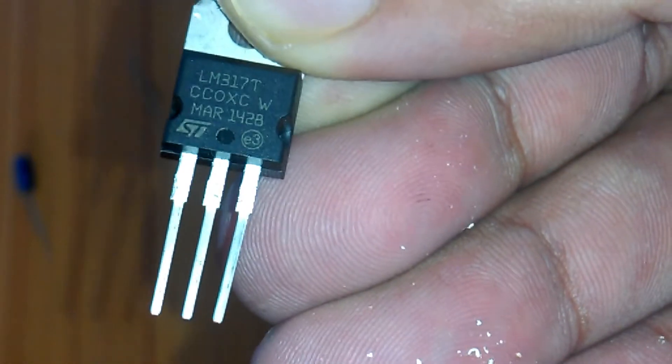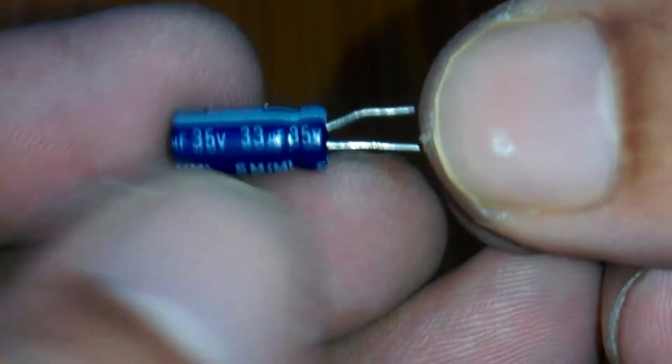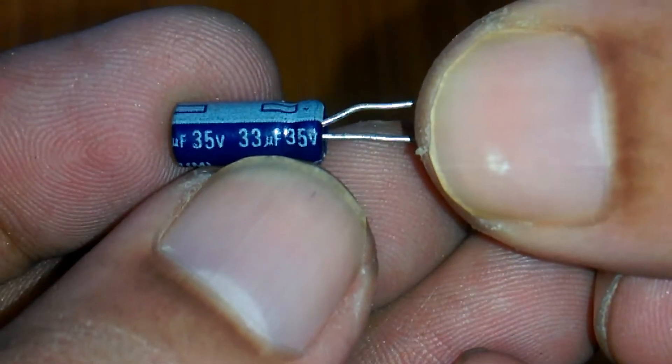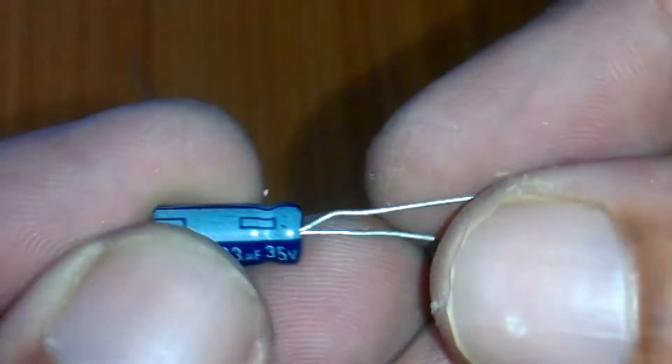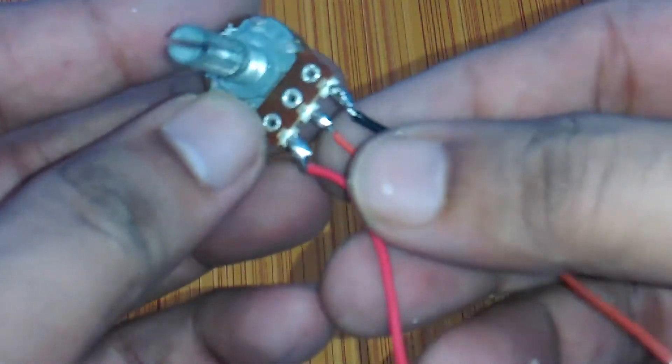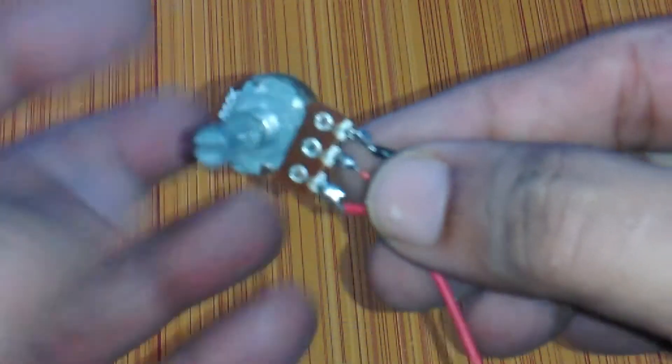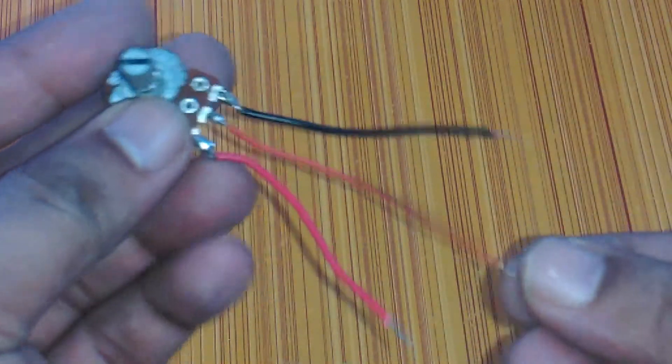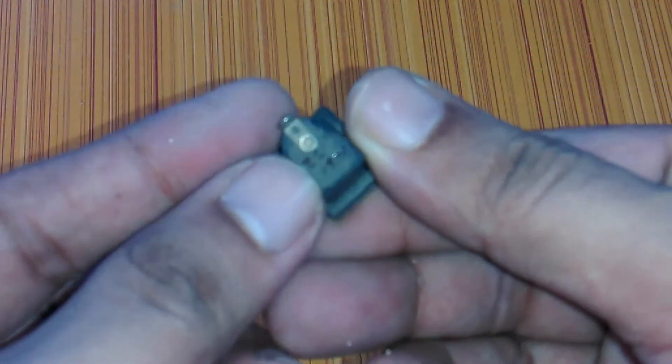We will also be needing a 33 microfarad capacitor—the longer lead is the positive and the shorter lead will be connected with the ground. We will also be needing a 214 ohm resistor and a variable resistor also known as potentiometer. I have already soldered three wires. We'll also be needing a female DC socket for connecting an adapter and a vero board for soldering the components.